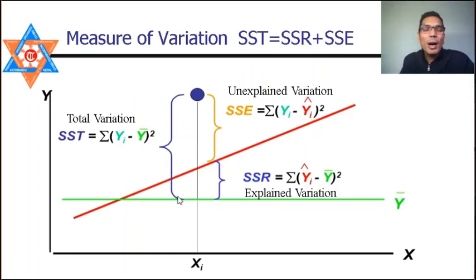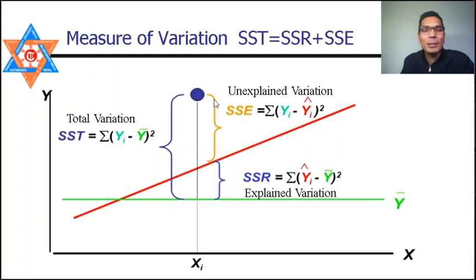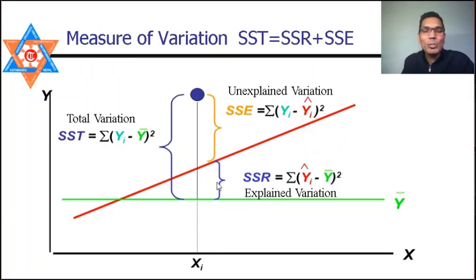A relative measure of regression fit is the coefficient of determination R². The total variation is partitioned as: SST = SSR + SSE, where SST = Σ(y − ȳ)², SSR = Σ(ŷ − ȳ)² (explained variation), and SSE = Σ(y − ŷ)² (unexplained variation). This variation structure is used to assess significance in regression analysis.